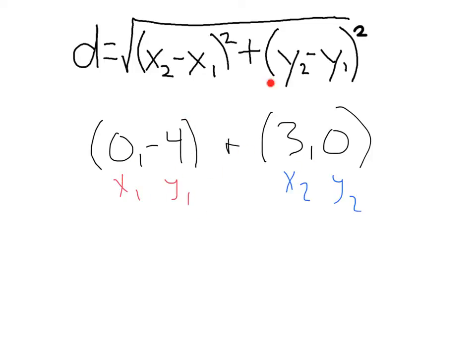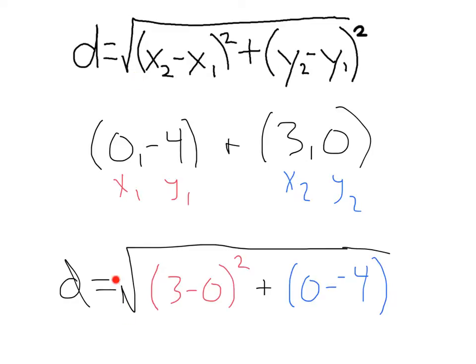Now, let's plug in these values into our distance formula. That's going to be the square root of x2 minus x1, 3 minus 0 squared, plus y2 minus y1, that's 0 minus negative 4 squared. Let's go from there to simplify.